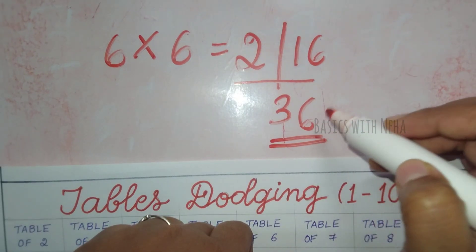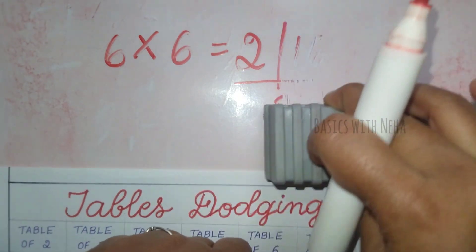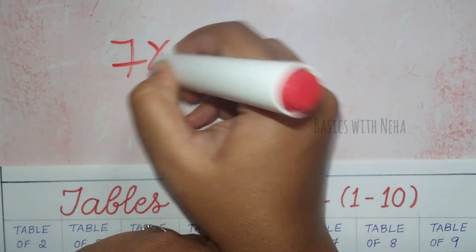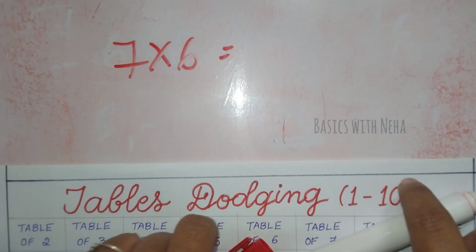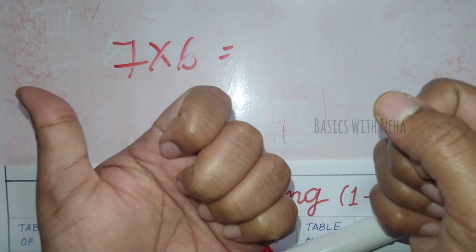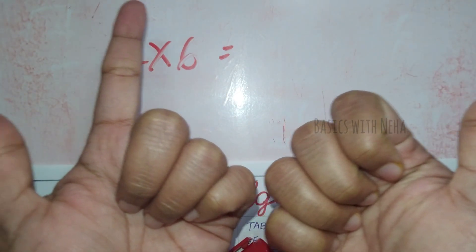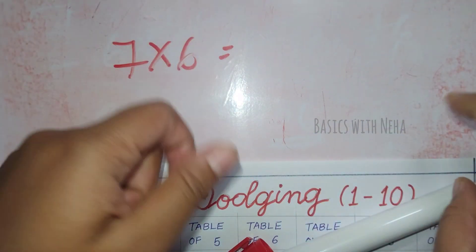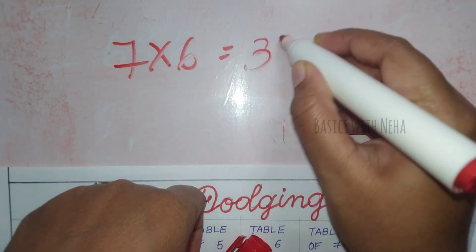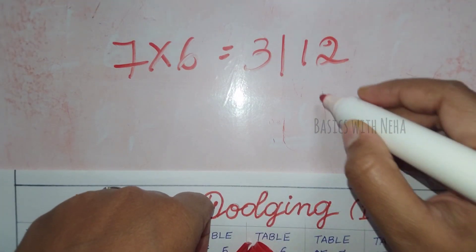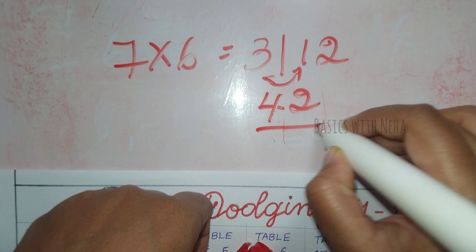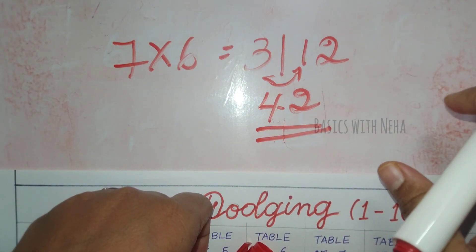Same thing applies with the table 7 as well. For example, if it is 7 into 6, you will first take 7. This is 6, 7, and this is 6. Three fingers are open and 4×3s are 12. So here we have to do the balancing. If I add these two, it will be 4 and 2 - 42. 7×6s are 42.